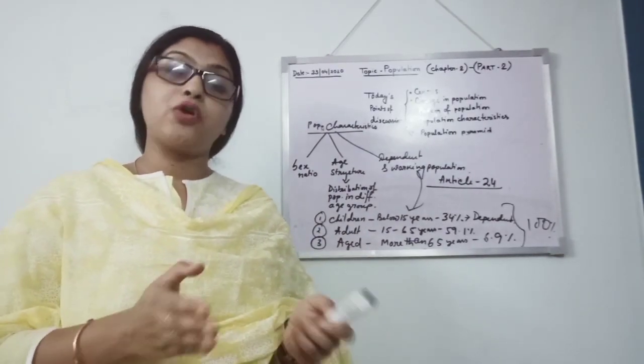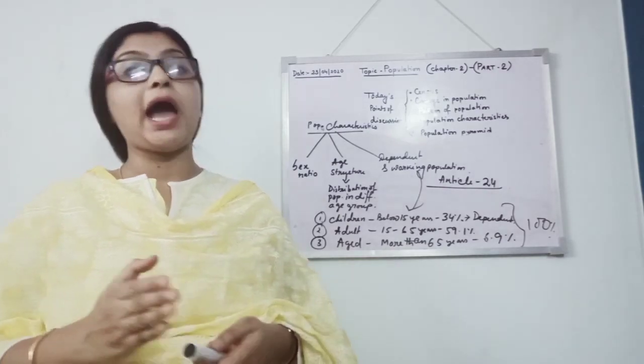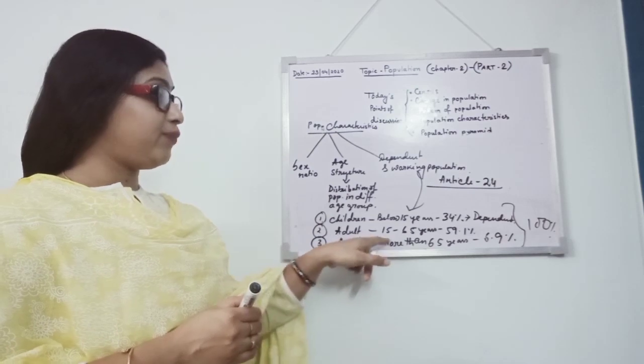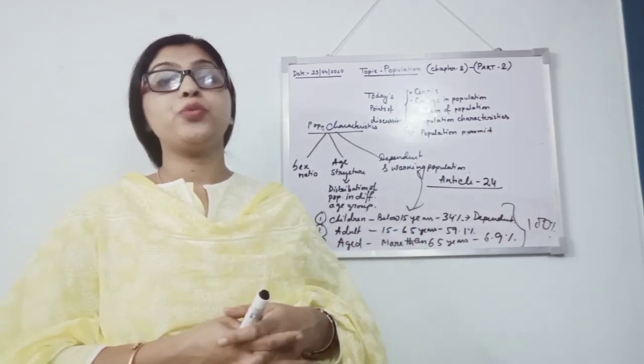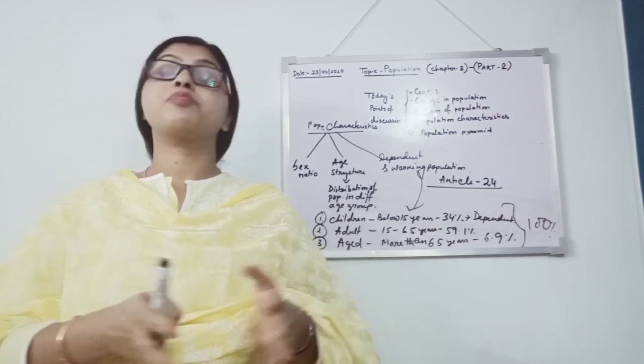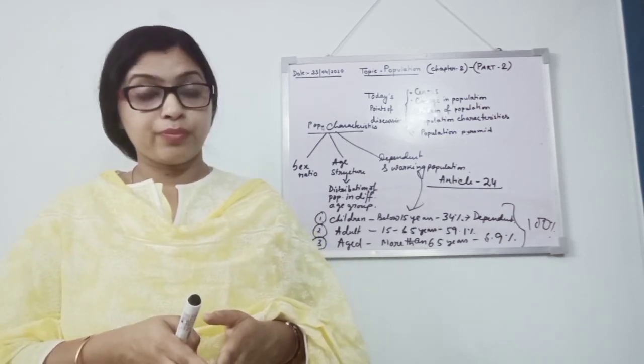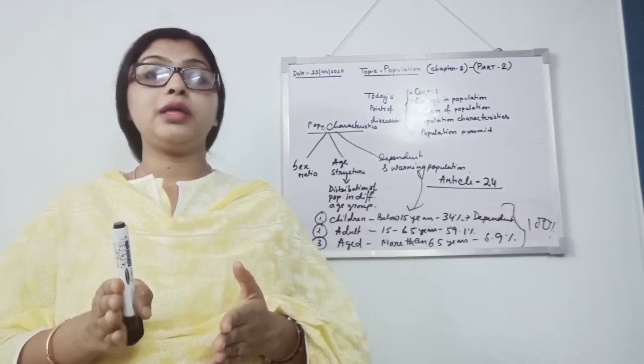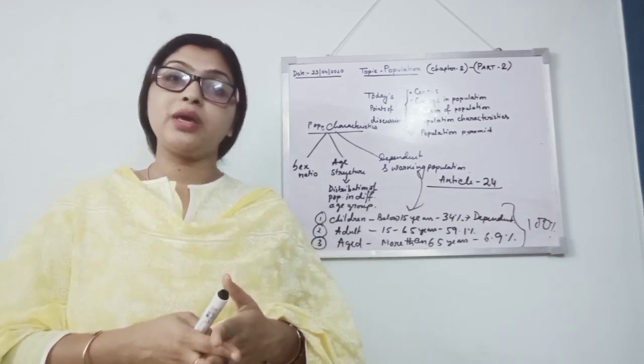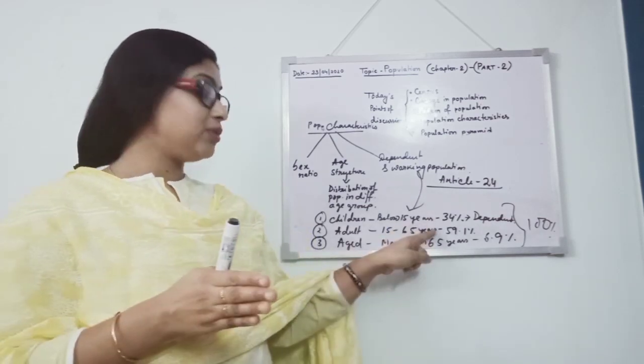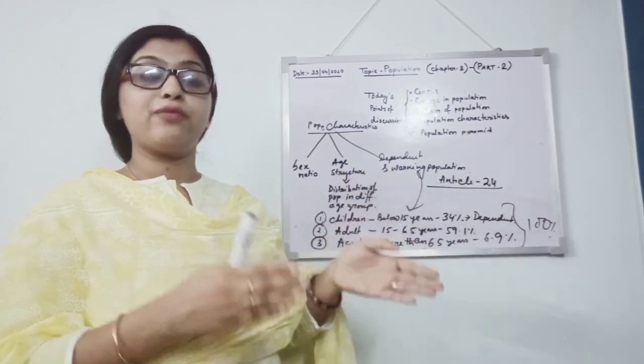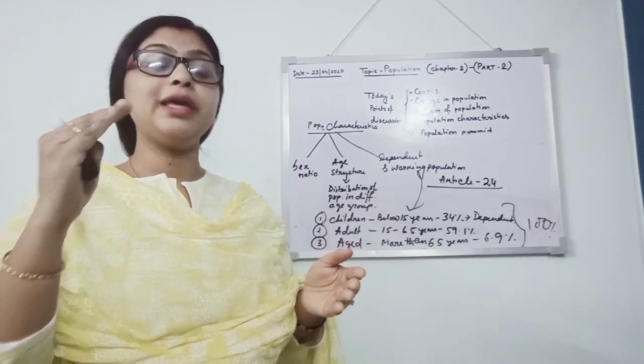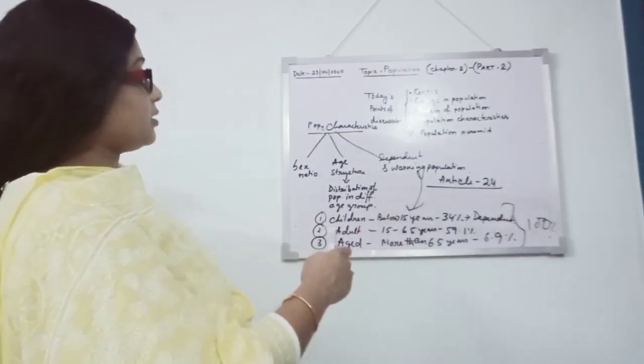Next, number 2 is adult 15 to 65 years. This age group is known as the working independent and most productive and reproductive age group. They maximum earn and this country is economically developed as well as they are developing this country. They are producing, they are engaged in some manufacturing units and helping to develop the country economically.